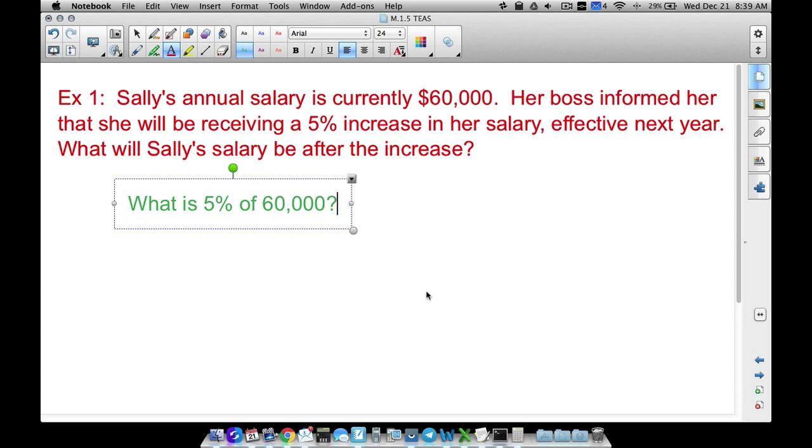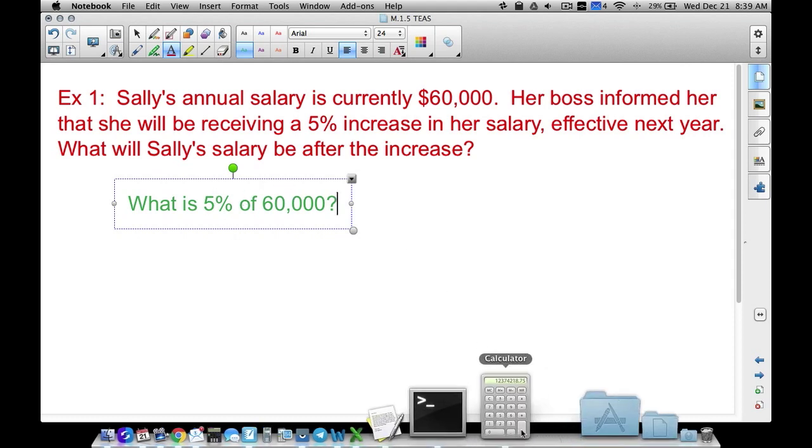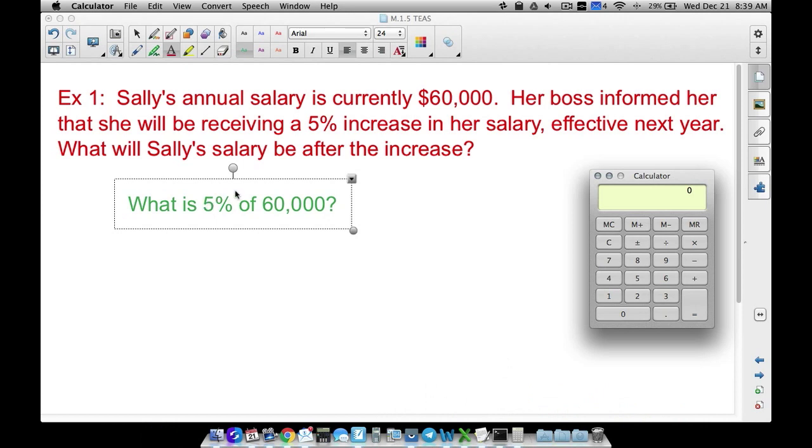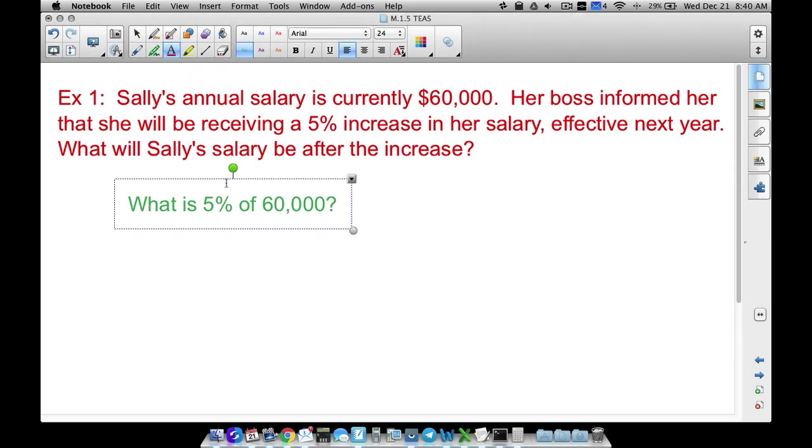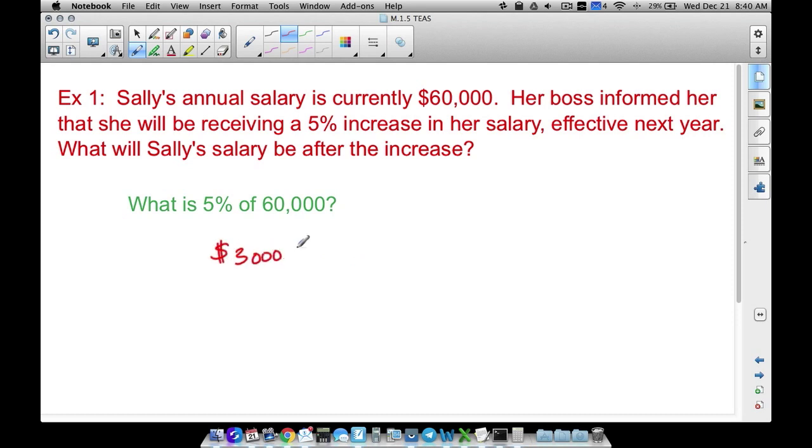Instead of going into a proportion—I have videos on proportions with percents and equations—when you want to find a percentage of a number, all you do is multiply the percent times the number. Be careful, the calculator probably will not have a percent key, so five percent is going to be 0.05. Of means multiply, so let's do sixty thousand. That increase will be three thousand dollars. Five percent of sixty thousand will be three thousand dollars.